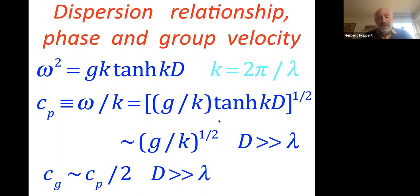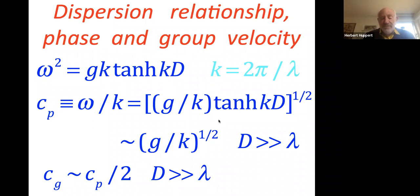The velocity at which the phases travel — the phase velocity — is omega over k. From the dispersion relationship, it goes like (g/k)^(1/2) for deep oceans where kd is large and tanh can be approximated by one. That's one important velocity — the phase velocity — the speed at which the maxima or minima of the wave travel.